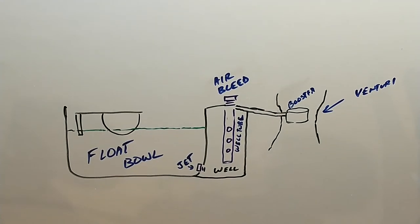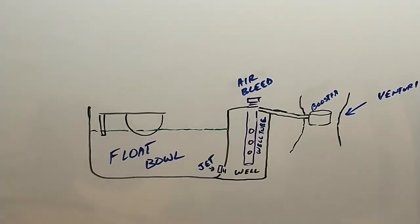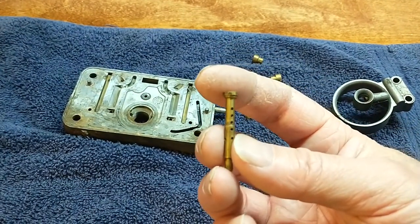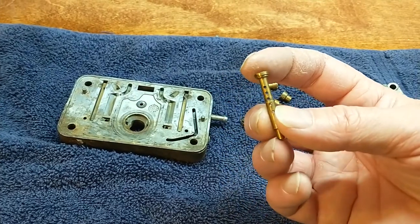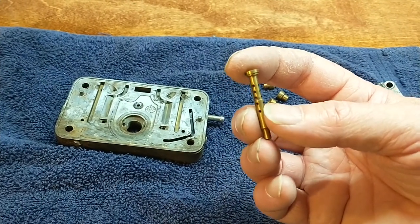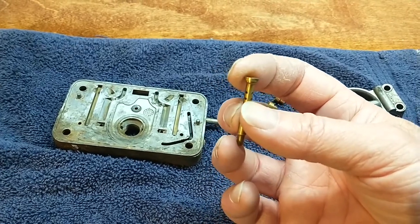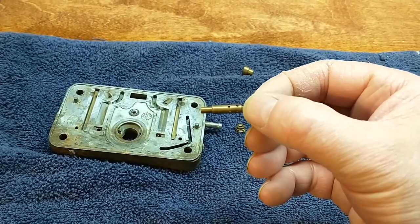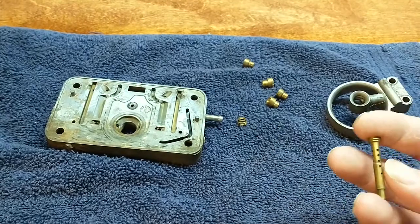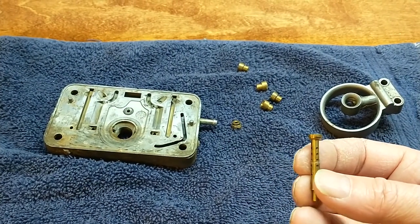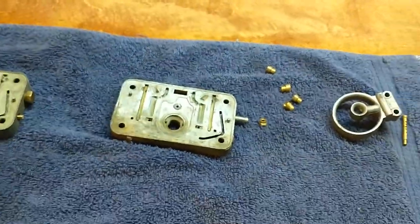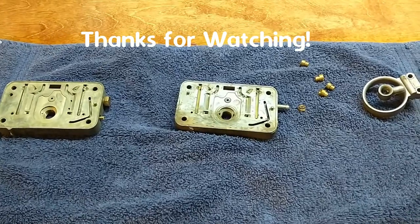And for us street types, we just need to pick the right carburetor to start with and run it. But I hope that helps. Air bleeds were something of a mystery to me for the longest time. And then I started working with Webers. And a lot of the documentation with Webers was very informative. And I started to learn exactly what's happening in a well tube as venturi signal increases. And it's good to know. So there, that's the up and down of well tubes. I hope that helped. Thanks for watching.